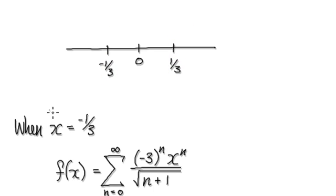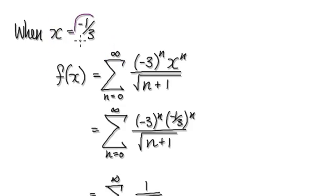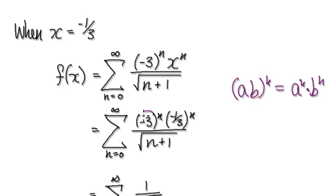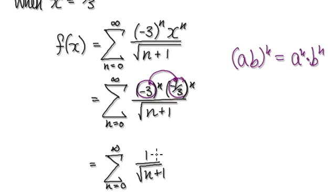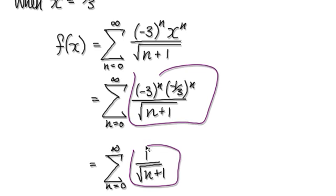Let's look at the case when x equals negative a third. When x equals negative a third, we would need to put this into the x here. Recall that (ab)^n = a^n × b^n, so you can merge these two together. Merging them gives you positive one to the power of n, and one to the power of n is just one.